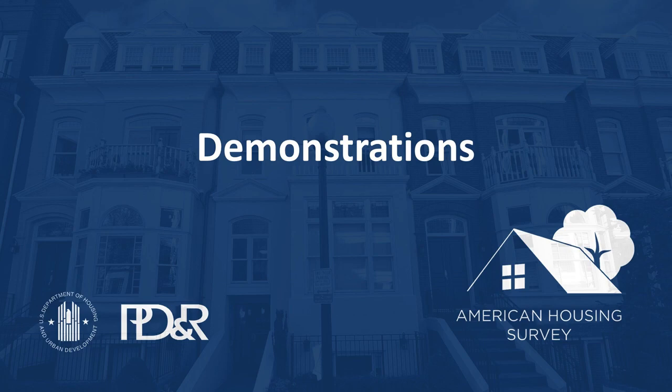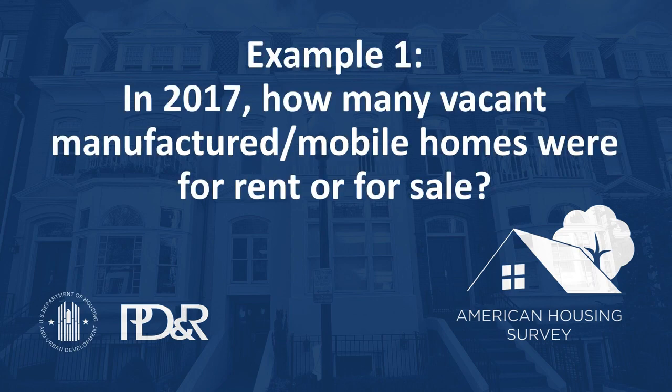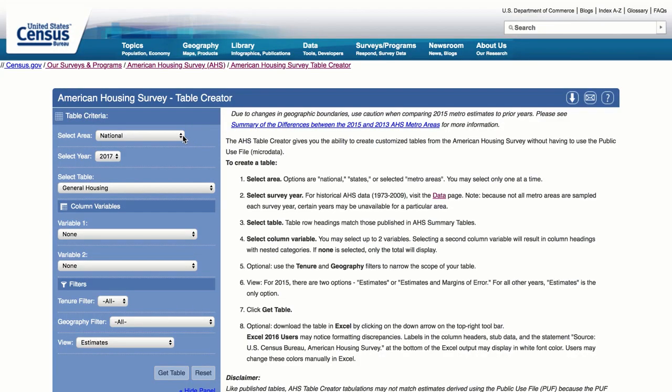We've put together several scenarios to illustrate how this data tool can be used and its limitations. Let's start with creating a table using the national data. Example 1: In 2017, how many vacant manufactured mobile homes were for rent or for sale? First, select Area: National. And select Year: 2017.